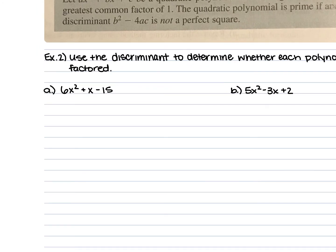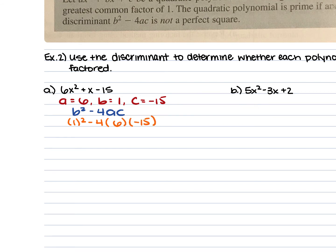For example 2a, we're given 6x squared plus x minus 15. Here a is 6, b is 1, and c is negative 15. Using the discriminant: 1 squared minus 4 times 6 times negative 15. That gives us 1, and negative 4 times 6 times negative 15 gives us positive 360. Adding these: 361. Since 361 is greater than 0, yes, this can be factored.